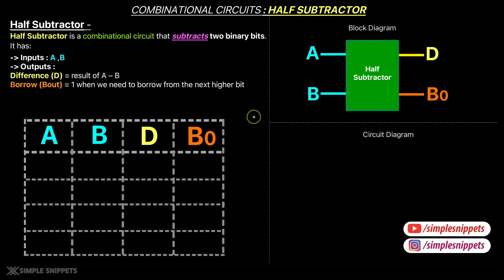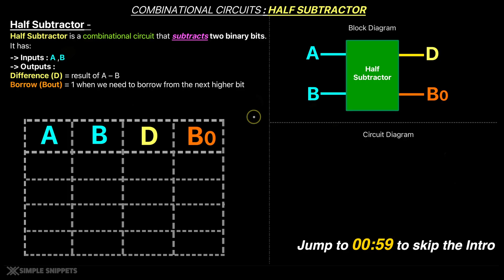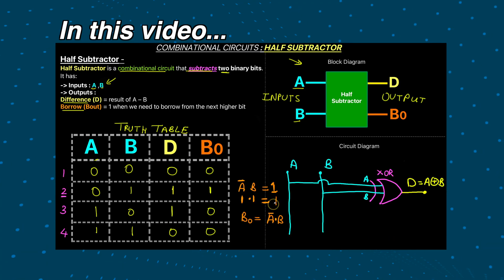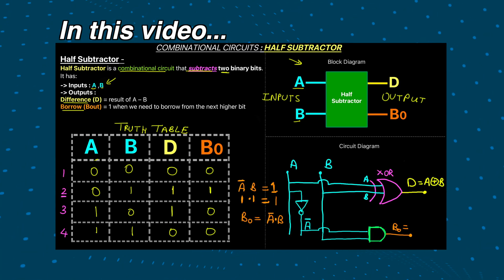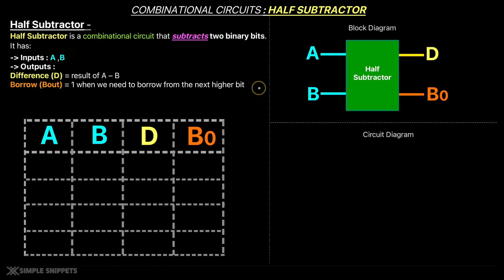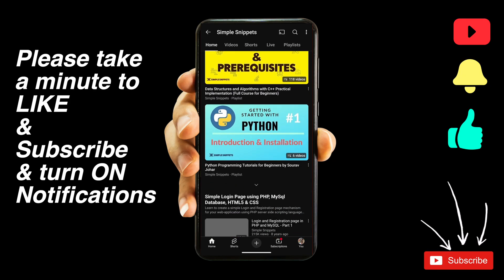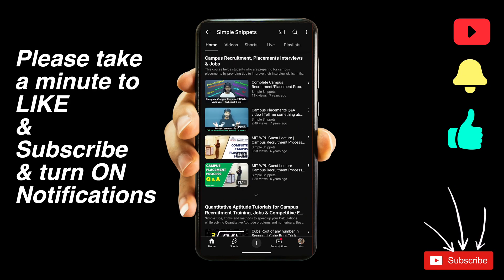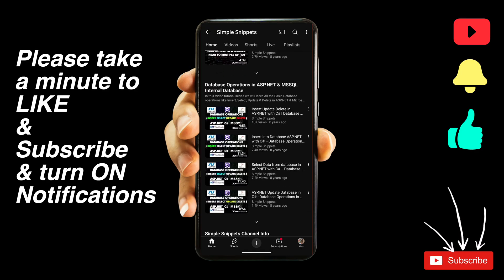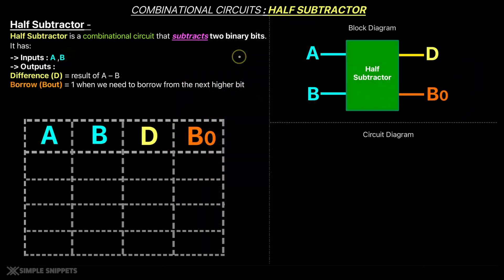Hey, what's going on guys. Tanmay here for Simple Snippets, and welcome back to another video tutorial on Boolean algebra and logic gates. In this video tutorial we are going to understand in detail the working of a half subtractor combinational circuit. I'm assuming you already know some basics of Boolean algebra, especially the fundamental logic gates and some important Boolean algebraic operations. If you don't know them, please check out this whole Boolean algebra playlist. We have already covered half adder and full adder as well.